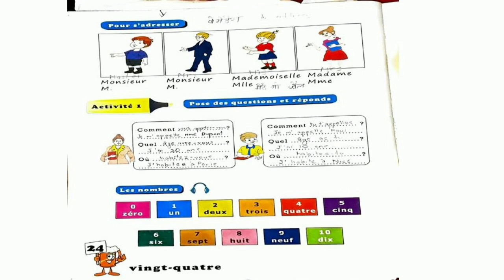Now we come to the second topic. That is Les Nombres. It means the numbers. We are going to discuss numbers from 0 to 10: zéro, un, deux, trois, quatre, cinq, six, sept, huit, neuf, dix.